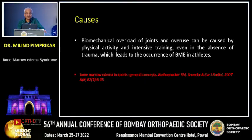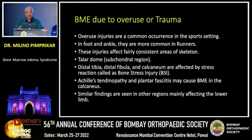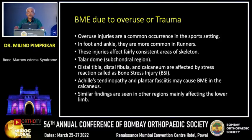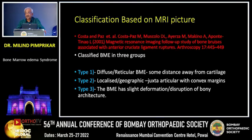Biomechanical overload of the joints and overuse, caused by physical activity and intensive training, can occur even in the absence of injury — these are called atraumatic BMEs — and that causes what is called a bone marrow lesion. There is a difference between bone marrow syndrome and a bone marrow lesion. Overuse is very common in sports settings, especially in the foot and ankle, and is very common in runners. They can also have upper tibial or medial tibial plateau stress fractures. These injuries affect fairly consistent areas of the skeleton, probably the weight-bearing areas. Examples in foot and ankle include the subchondral area of the talar dome, distal tibia, fibula, and calcaneum. These injuries are sometimes also called bone stress injuries, and they are associated with different types of tendinopathies, with similar findings seen mainly in the lower extremity.